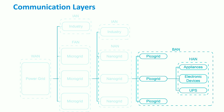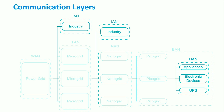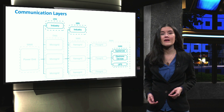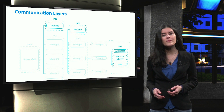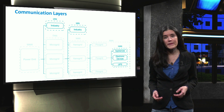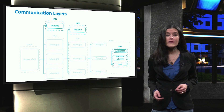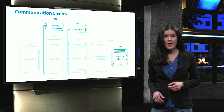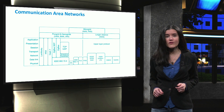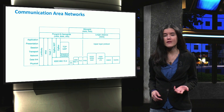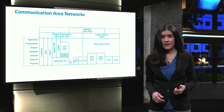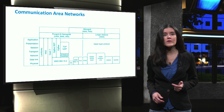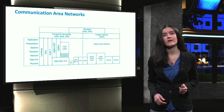Domestic consumers are in home area networks, while industries are in industrial area networks. The body area networks combine several home area networks, each belonging to a different home or apartment. The lowest levels of communication architecture are the body area network, industrial area network, and home area network.